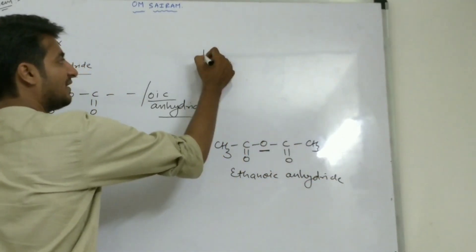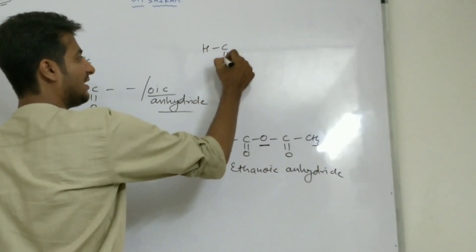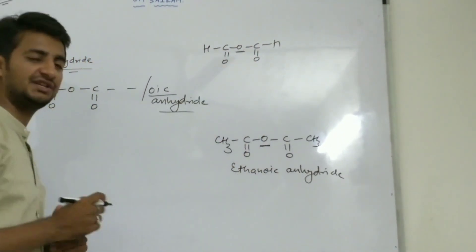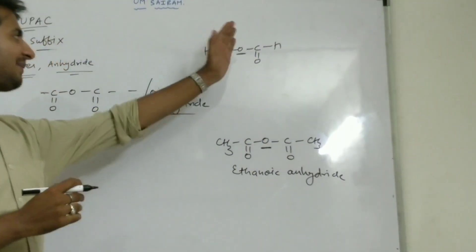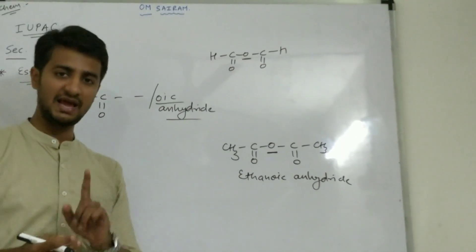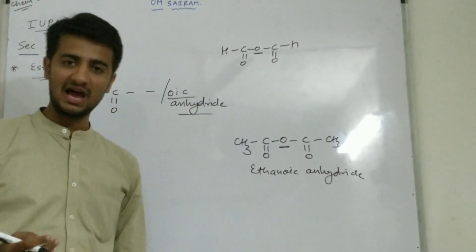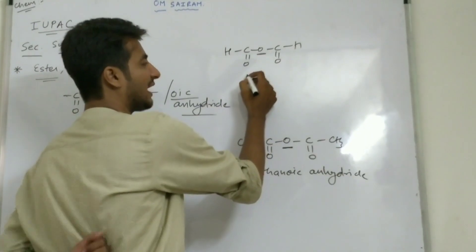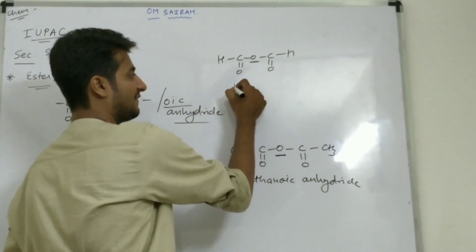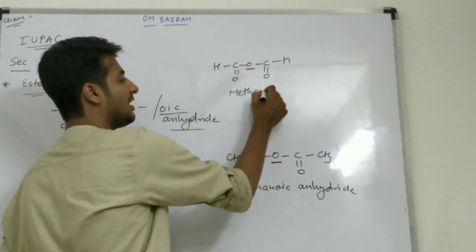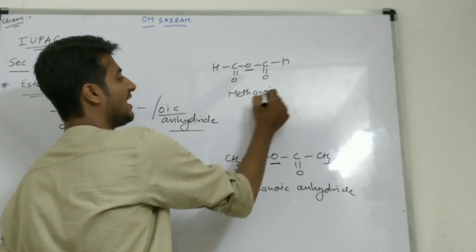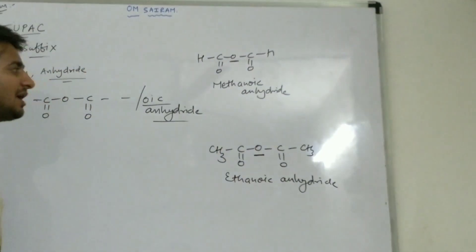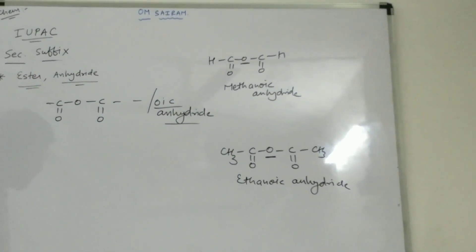Another example: H — C double O — O — C double O — H. Consider this oxygen. On the left side of oxygen how many carbons are there? One. Right side how many carbons? One. Both sides have the same number of carbons — one — so it will be methanoic anhydride. The name of this compound is methanoic anhydride.